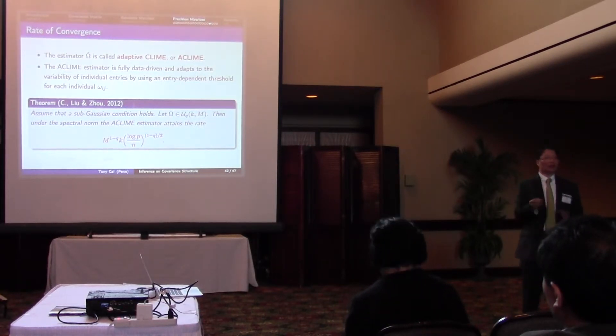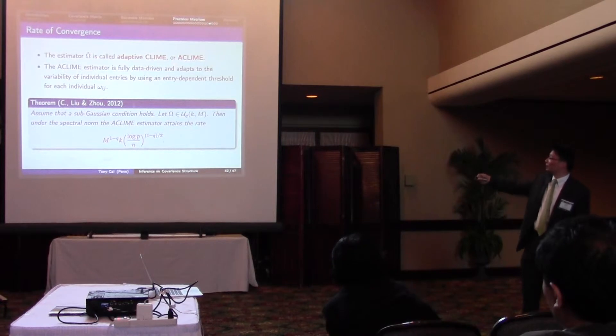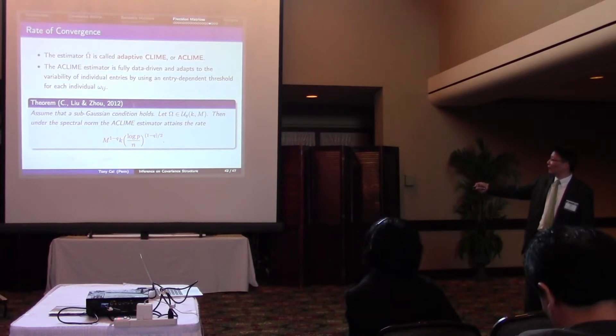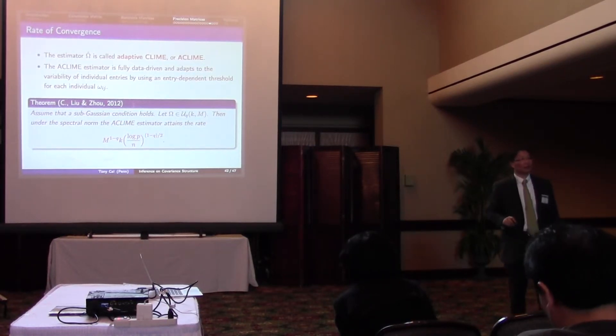this estimate has nothing to do with anything that's unknown. We don't use the sparsity parameter or anything like that. So it's an adaptive procedure. And one can show that this estimate attains this rate. So it's M to the power 1 minus q times k times log p over n to the 1 minus q over 2. Everything else remains the same except the power now is 1 minus q.